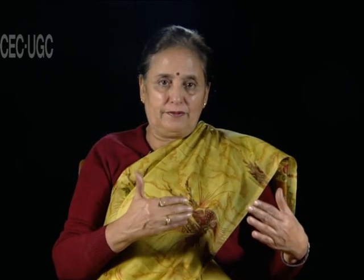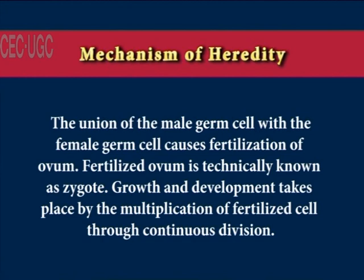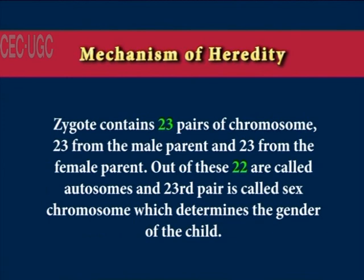Now we will briefly discuss the mechanism of heredity. Mating is the first step for reproduction. A human being has its beginning in the union of the male germ cell, the sperm, with the female germ cell, the ovum. The union of these two germ cells causes fertilization of the ovum. The fertilized ovum is technically known as the zygote. Growth and development take place by the multiplication of the fertilized cell through continuous division.